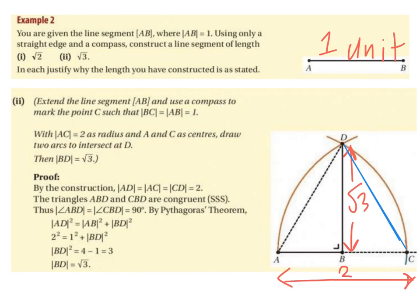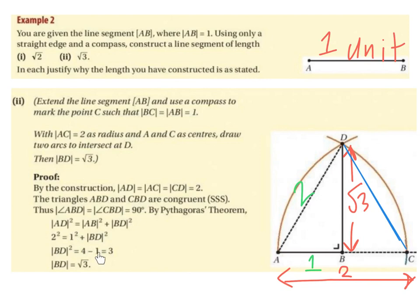Again using Pythagoras' theorem on triangle ABD: AD² = AB² + BD². AD is the hypotenuse with length 2, and AB is 1 unit. So 2² = 1² + BD², which gives 4 = 1 + BD², therefore BD² = 3. Solving for BD: BD = root 3. So this distance from B to D is root 3.